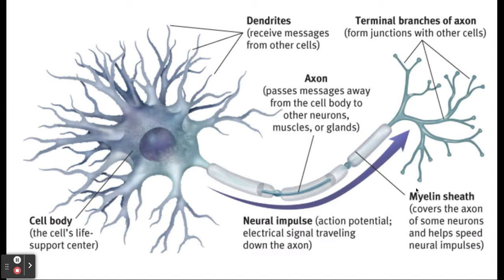The message travels along the axon and gets to the terminal branches, where they form junctions with other cells. To jump to another cell, it has to cross the synaptic gap — a very, very small space — and then that message is transmitted to other cells, other muscles, whatever it might be.